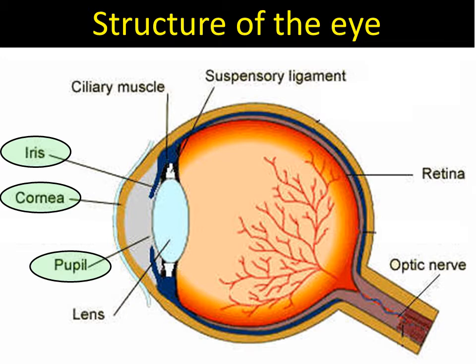Moving inwards, we have the pupil itself, which really is just a gap in the iris — a hole that allows light to pass through. It looks black only because there's no colour, no light behind it, so it's like looking through a door into a dark room; that room would look black because of the absence of light. Doctors often shine lights into your pupil so they can see inside your eye, and it's a very good indication of your health.